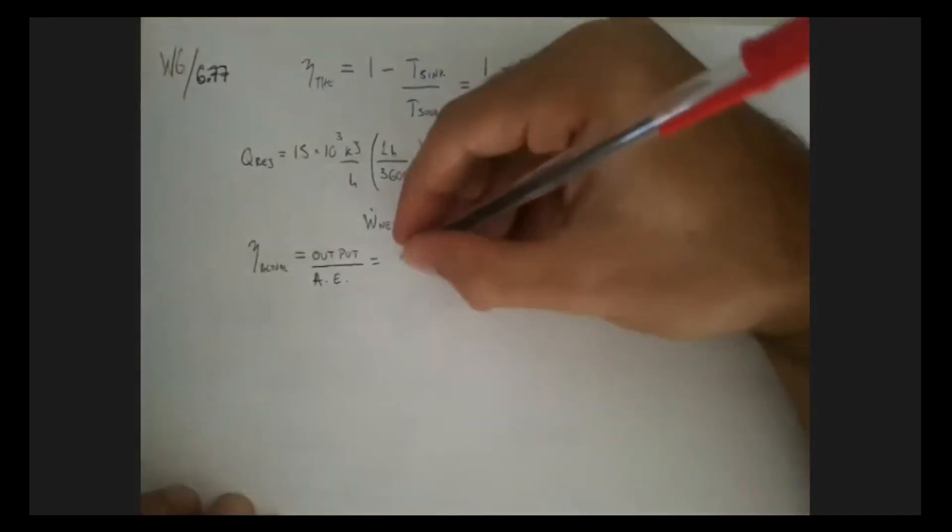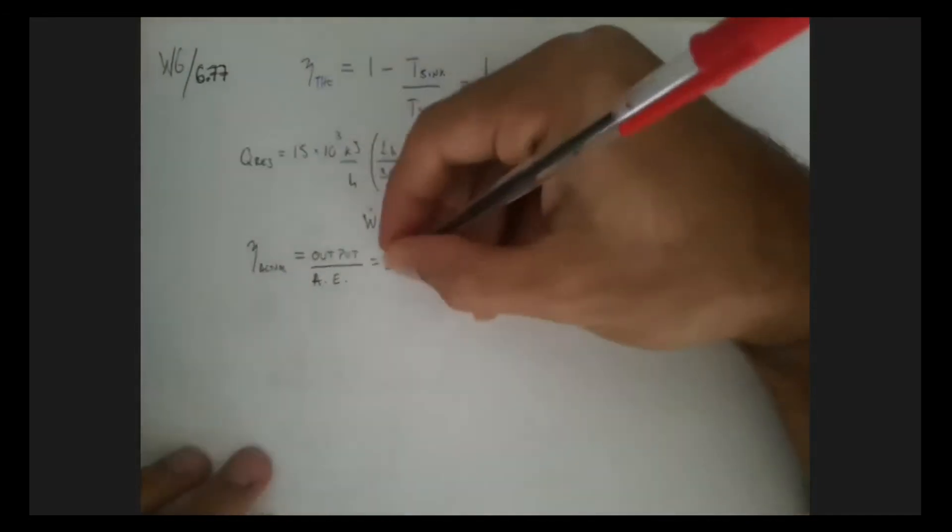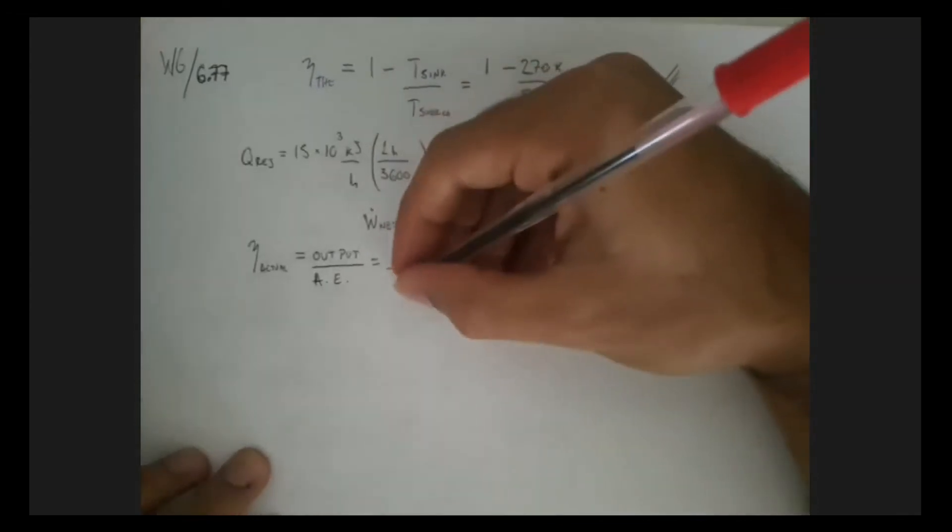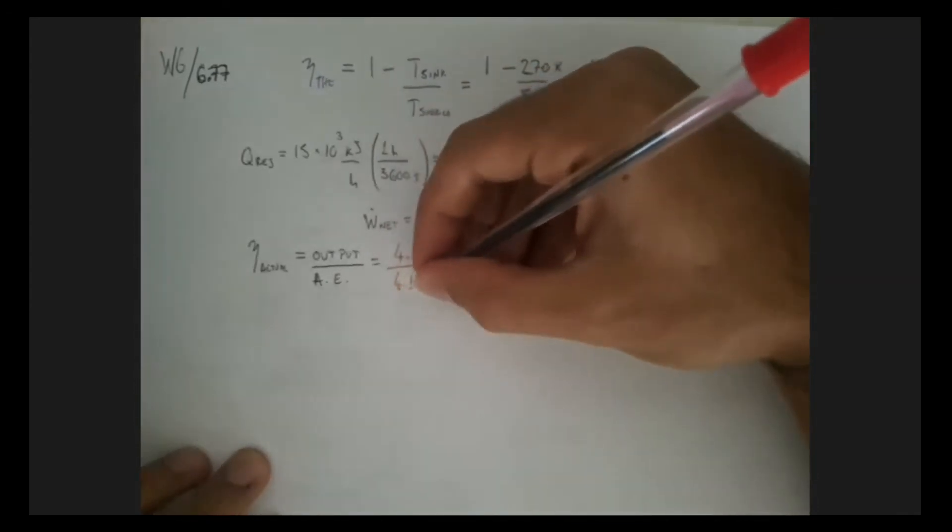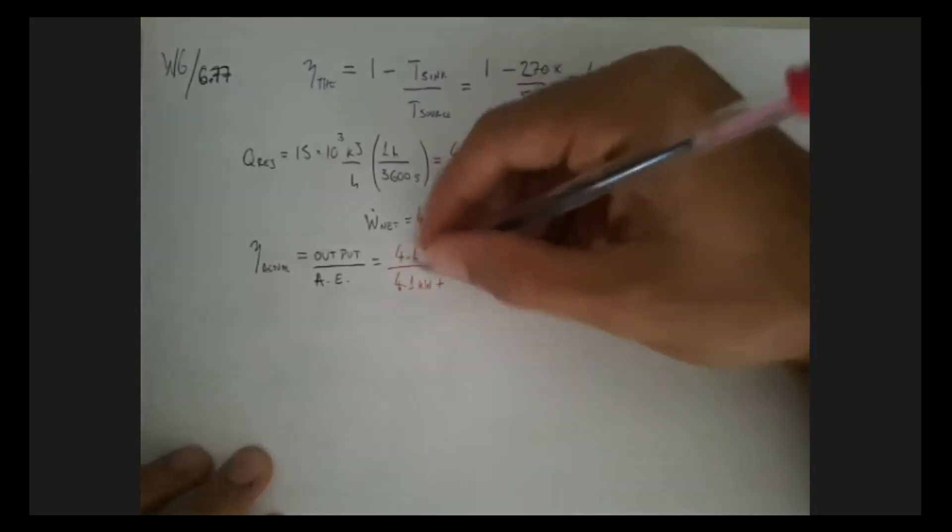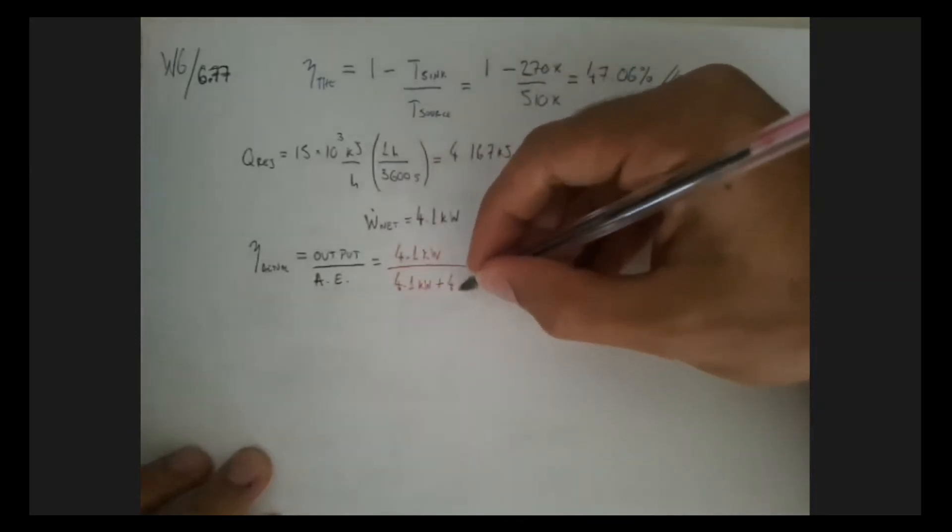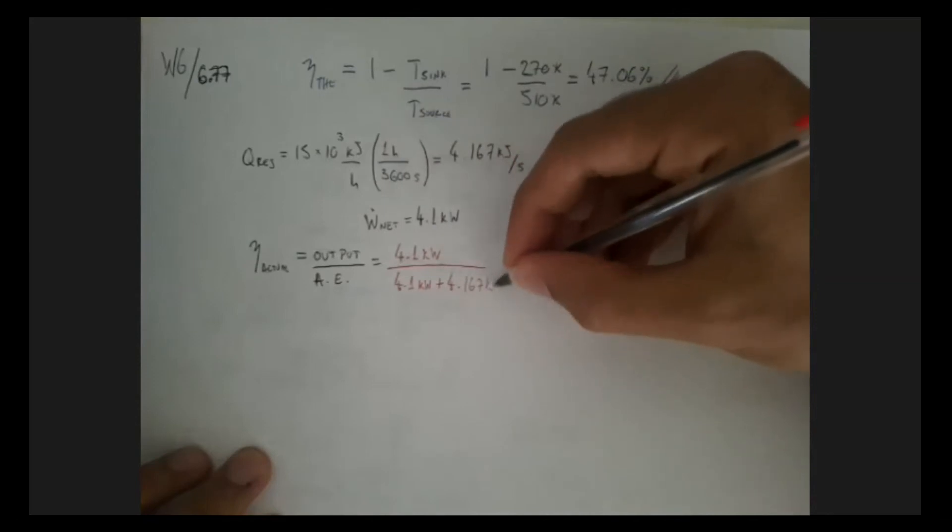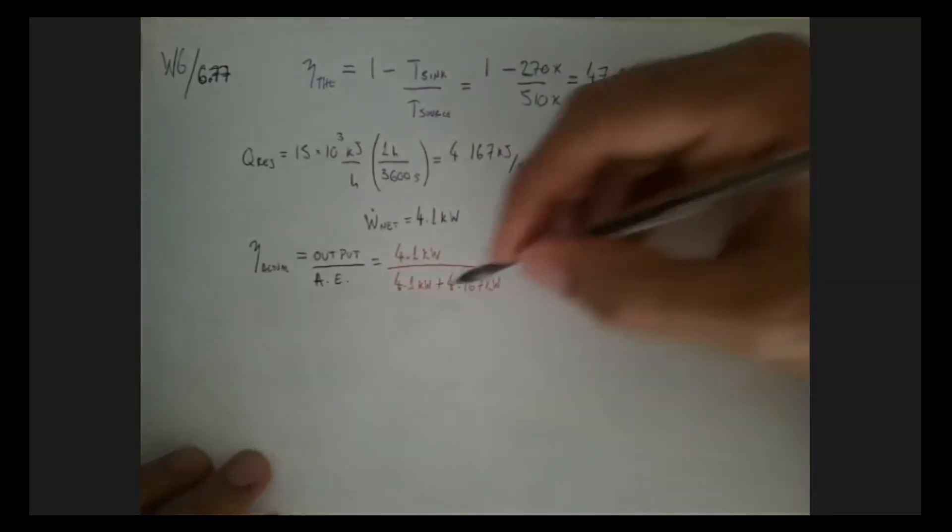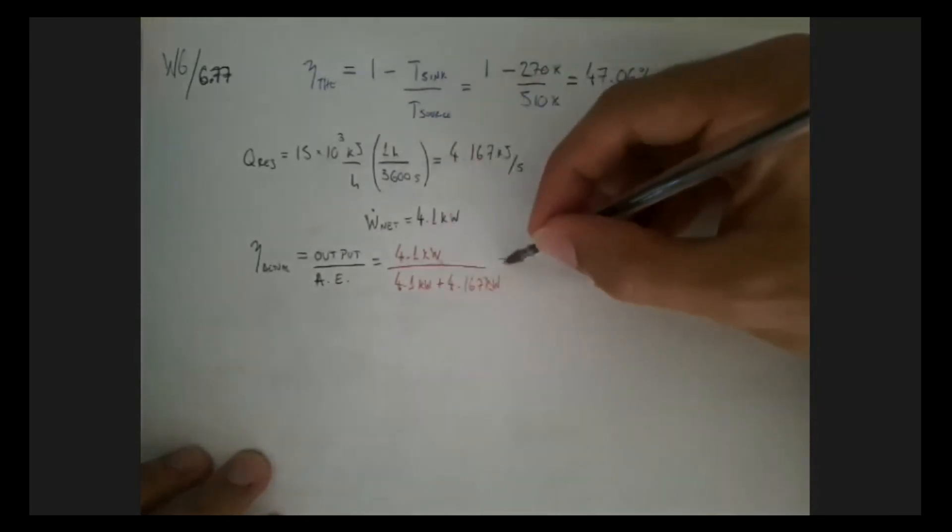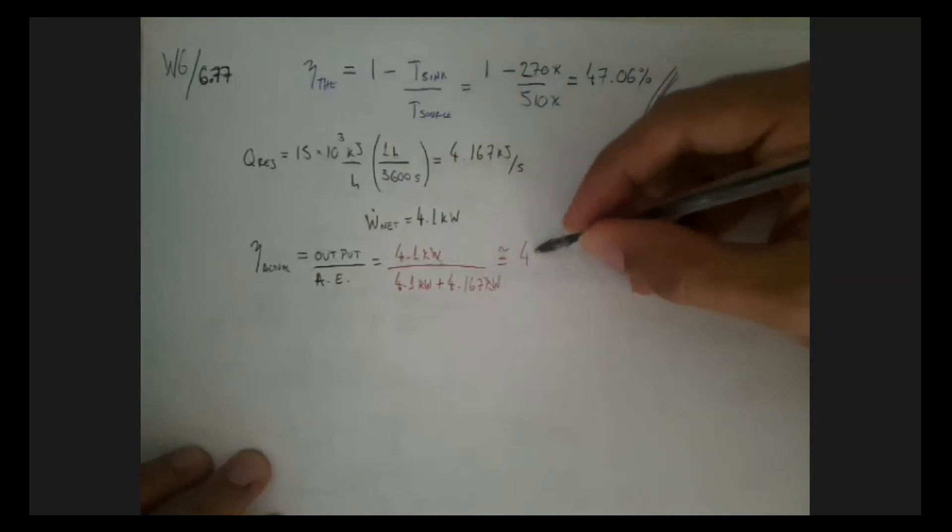So this guy gives out 4.1 kilowatts while having available energy of 4.1, which is exactly the same one, plus whatever was rejected, whatever we could not absorb and use as useful energy. So same units, we can sum them up. Kilowatts go away. And then this renders approximately 49.6%.